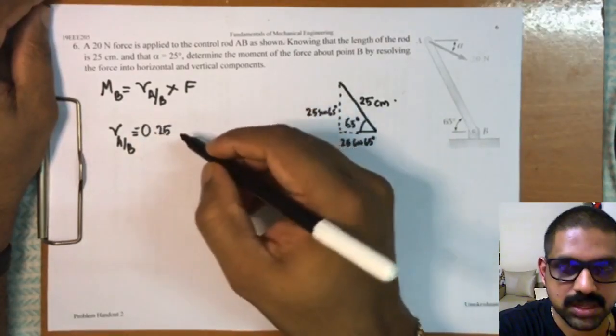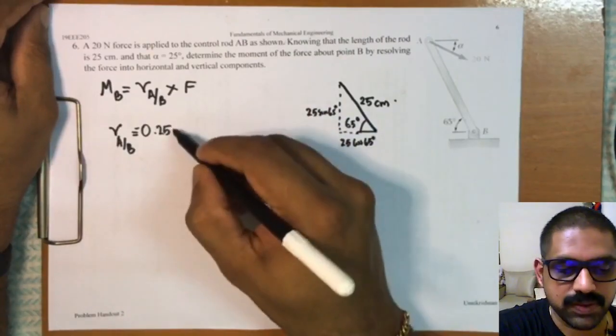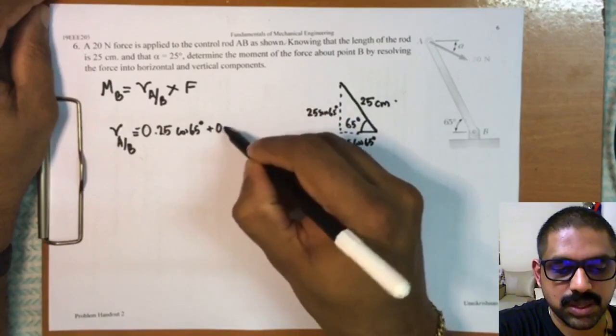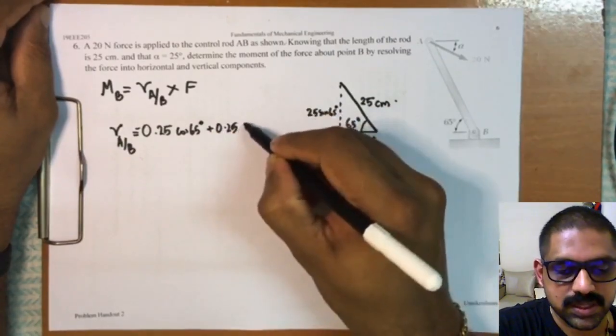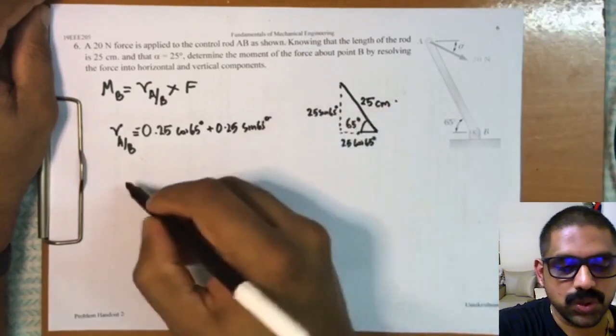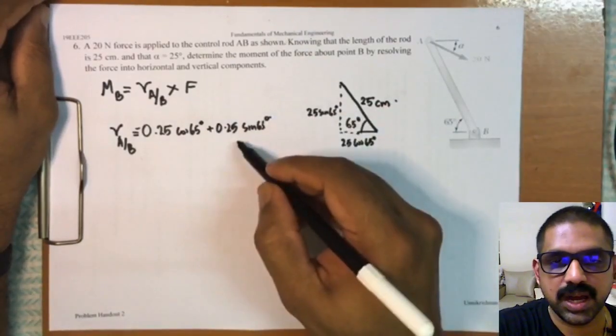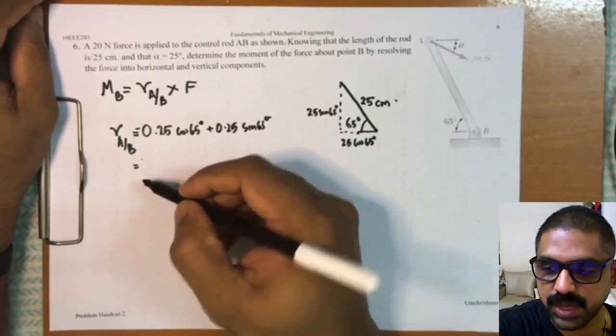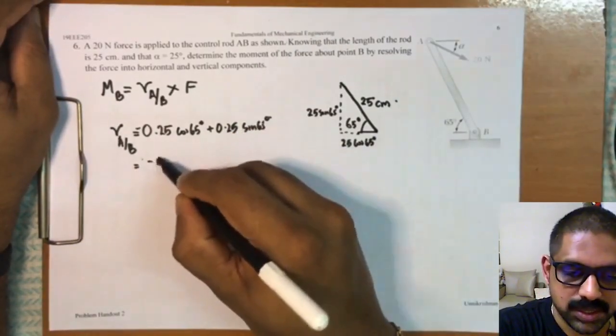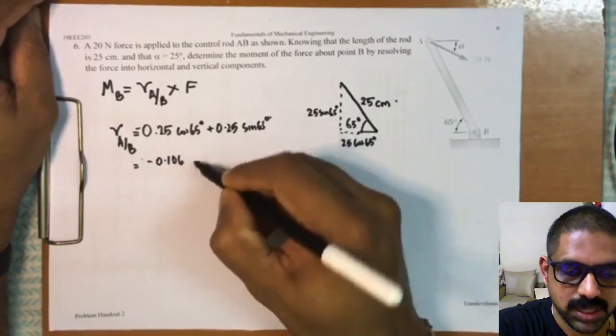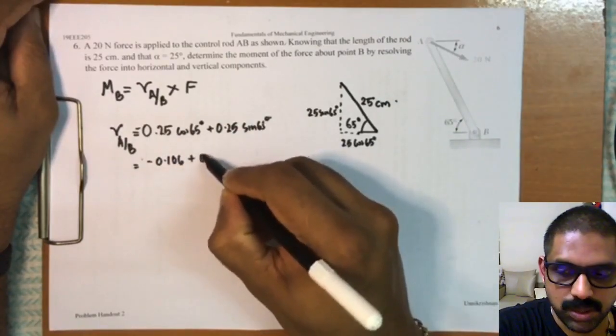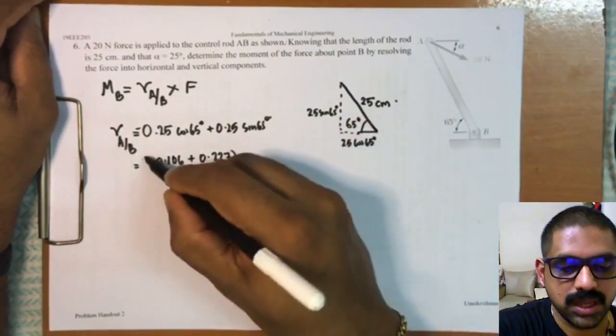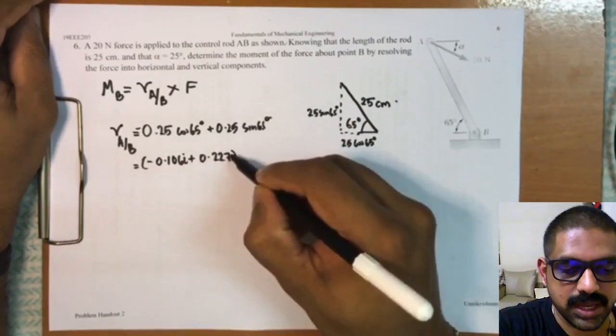...I am converting it into meters: minus 0.25 cos 65 plus 0.25 sin 65. So this becomes my r_AB, and this roughly translates to be minus 0.106 plus 0.227, and this whole thing is in i and j meters.